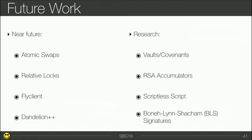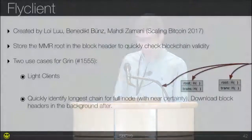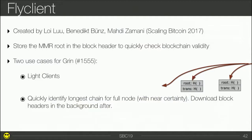First, FlyClient — created by Lolliou, Benedikt Bünz, and Madars Virza, and presented at Scaling Bitcoin 2017. Basically, you store the Merkle Mountain Range root in the block header to quickly check the blockchain validity. There are two use cases for Grin: for light clients, you can sync the blockchain really quickly; and for full nodes, you can quickly identify the longest chain and download block headers in the background. One cool thing is that we already store the MMR root in Grin, so we just need to use it.